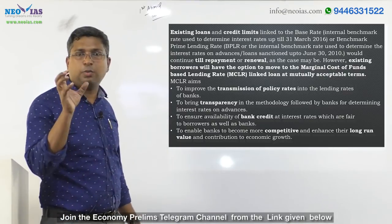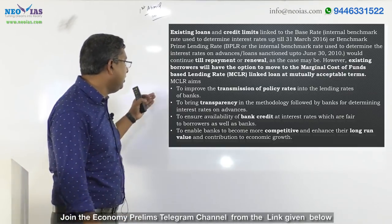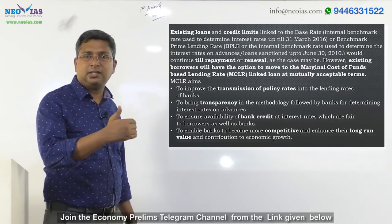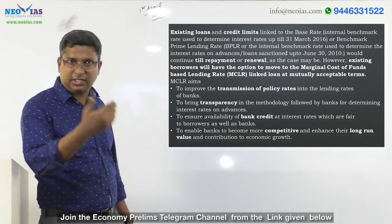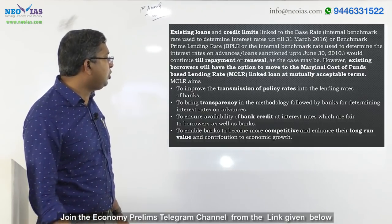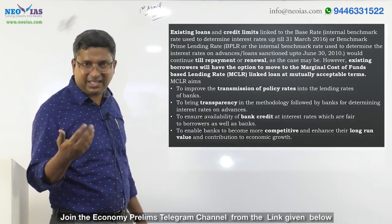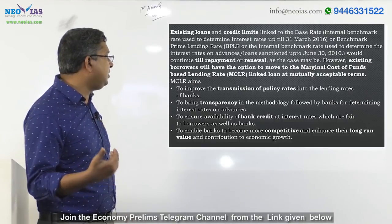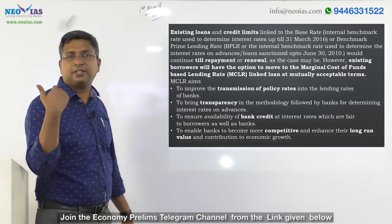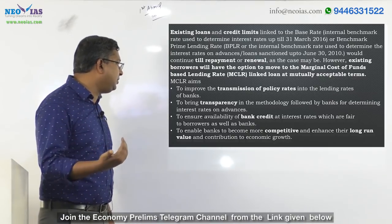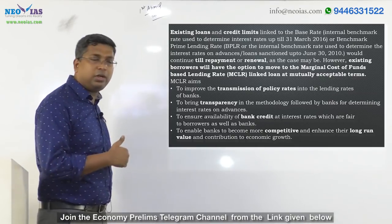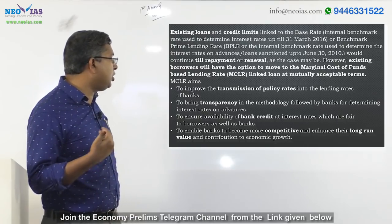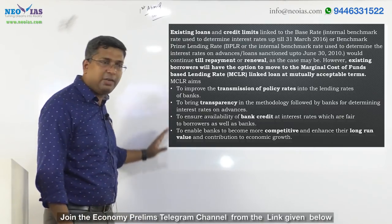The four objectives of MCLR: First, to improve the transmission of policy rate into the lending rate of banks — that is monetary transmission. Second, to bring transparency in the methodology followed by banks for determining interest rates on advances. Third, to ensure availability of bank credit at interest rates which are fair to borrowers as well as banks. Fourth, to enable banks to become more competitive and enhance their long-run value and contribution to economic growth.